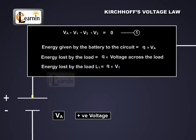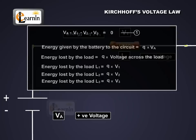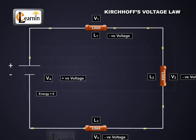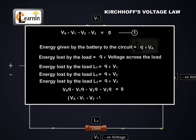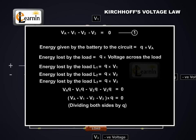The energy lost by each load equals the charge times the branch voltage across the load. So the energy lost through L1 is Q times V1, and similarly the other energies lost are Q times V2 and Q times V3. By the law of conservation of energy, the charge will have zero energy as it returns to the negative end of the battery, giving us VA·Q minus V1·Q minus V2·Q minus V3·Q equals zero, which simplifies to VA minus V1 minus V2 minus V3 equals zero.